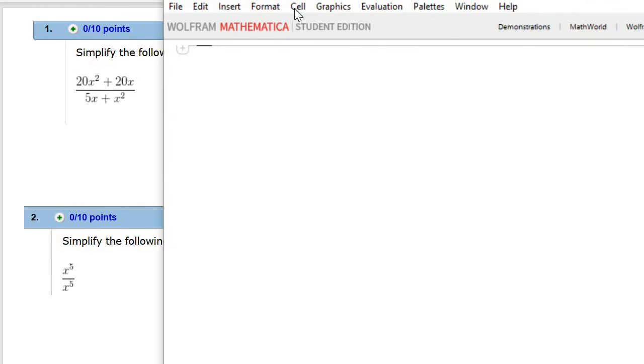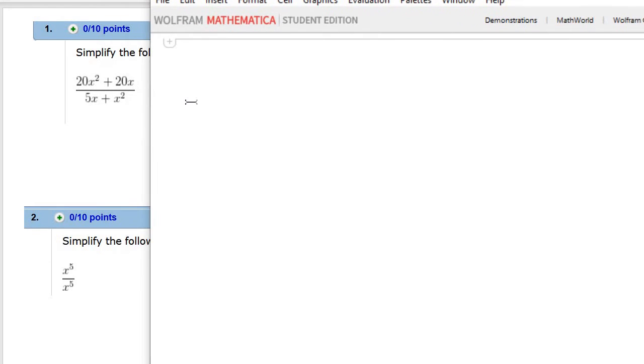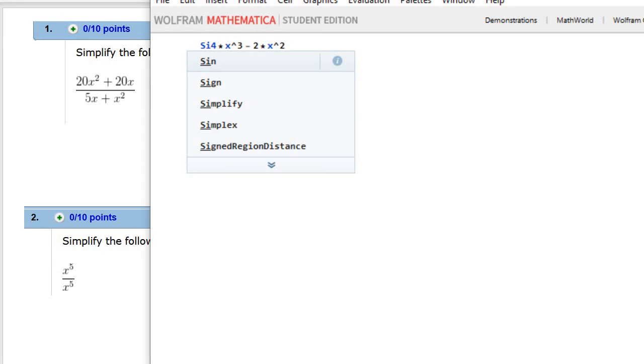I can put in any expression in here. I'm just going to do something different: 4 times x cubed minus x squared. If I put 2x squared, and then if I put simplify and I put that expression in.